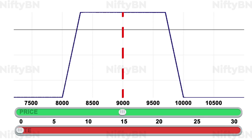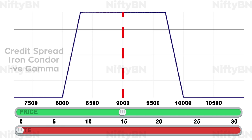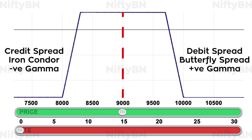As learned in the previous videos, an iron condor is a combination of two credit spreads — a bull put spread and a bear call spread. Credit spreads possess negative gamma, and since an iron condor is made up of two credit spreads, it possesses negative gamma too. That is, the position loses value as the price of the underlying approaches one of the short strike prices. So in order to hedge the negative gamma, we need to add positive gamma options positions, such as debit spreads and butterfly spreads close to the short strike prices.